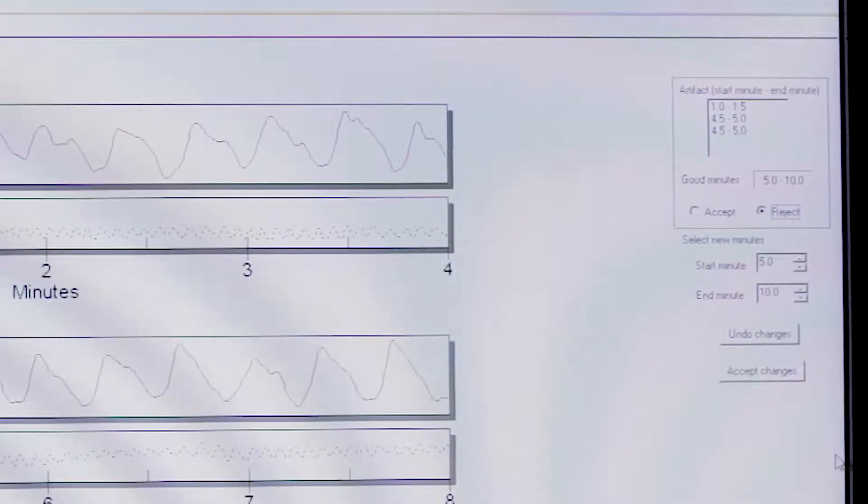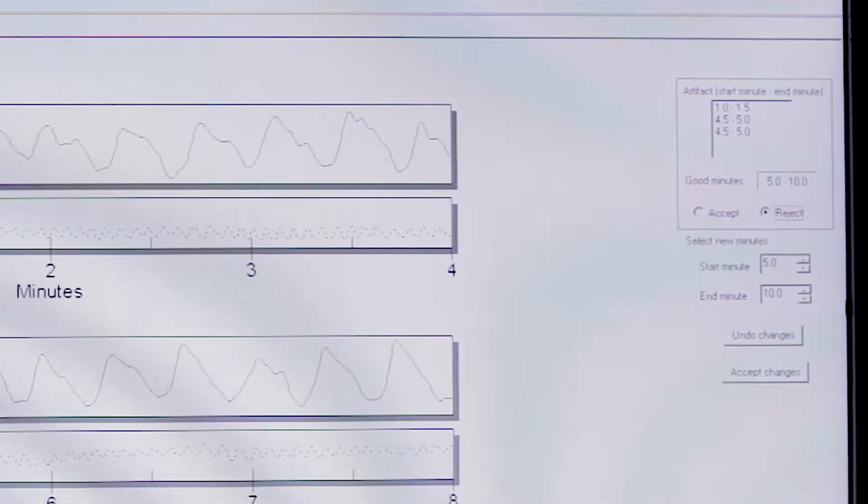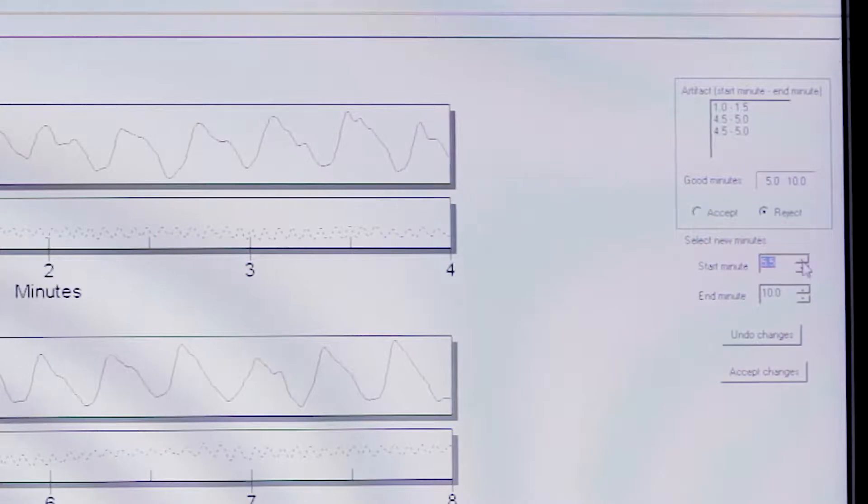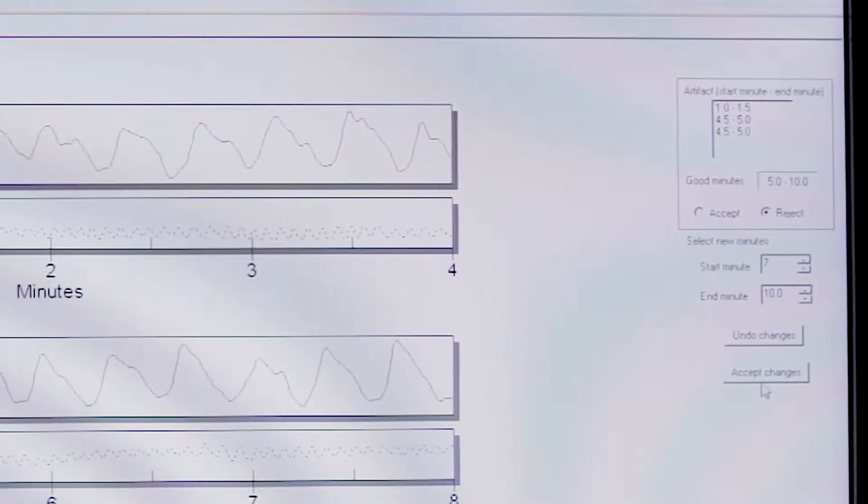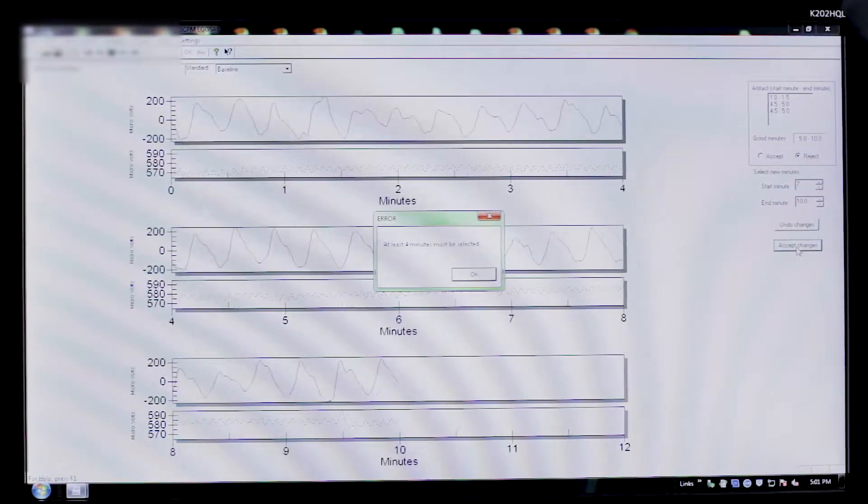Remember I had said that you need to pick four contiguous minutes out of every 10-minute segment. What happens if I choose not to do that? I'm going to leave the 10 where it is, and I'm just going to change this 5 to a 7, which would give me 7 minutes, and say accept these changes.